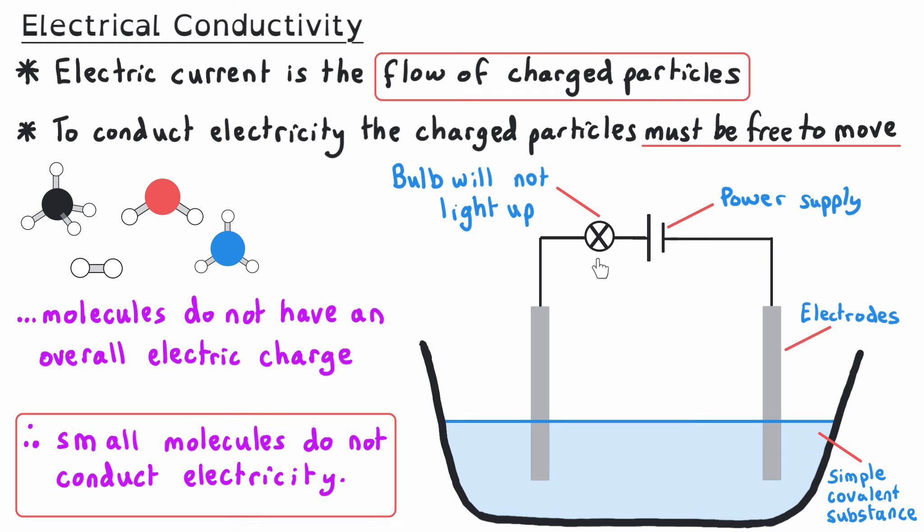Since these intermolecular forces are weak, they need very little energy to overcome. So small molecules have relatively low melting and boiling points, which means that substances consisting of small molecules are usually gases or liquids at room temperature — taken to be 20 degrees Celsius. These substances are liquids or gases at room temperature because the molecules have enough energy to overcome the intermolecular forces holding the particles close together.